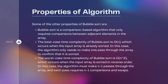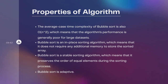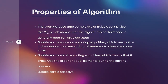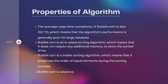The worst case time complexity of bubble sort is O(n²), which occurs when the input array is sorted in reverse order. In this case, the algorithm must make N-1 passes through the array, and each pass requires N-1 comparisons and swaps. The average case time complexity of bubble sort is also O(n²), which means that the algorithm's performance is generally poor for large datasets. Bubble sort is an in-place sorting algorithm, meaning it does not require any additional memory to store the sorted array. Bubble sort is also a stable sorting algorithm, which means it preserves the order of equal elements during the sorting process.